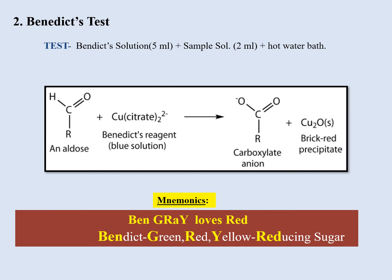Next is Benedict's test. The reagents are Benedict's solution and the sample solution; you add it into a hot water bath. The mnemonic for this test is 'Ben grey loves red.' Here, 'Ben' gives you the idea of Benedict's test, 'G' stands for green, 'R' for red, and 'Y' for yellow. The red color indicates reducing sugar, so Benedict's test gives a green, red, or yellow color confirming the presence of reducing sugar.